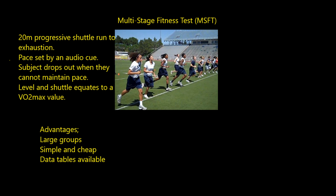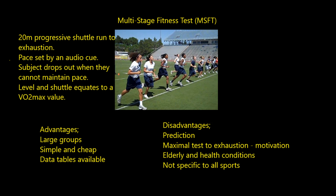This is a relatively straightforward subject. The advantages: again, we can do it on large groups. It's simple and cheap. Data tables tell us what each level and shuttle means in terms of a VO2max value. A lot of the advantages for these tests are very similar to each other. The disadvantages: it's a prediction — the level and shuttle you achieve predicts your VO2max, not a direct measurement. It's a maximal test to exhaustion, so motivation is an issue — we've probably all dropped out of the multi-stage fitness test before we truly had to. It's not good for the elderly and those with health conditions due to its maximal nature. And again, it's not specific to all sports — perfect for running sports, but not for cyclists or rowers.